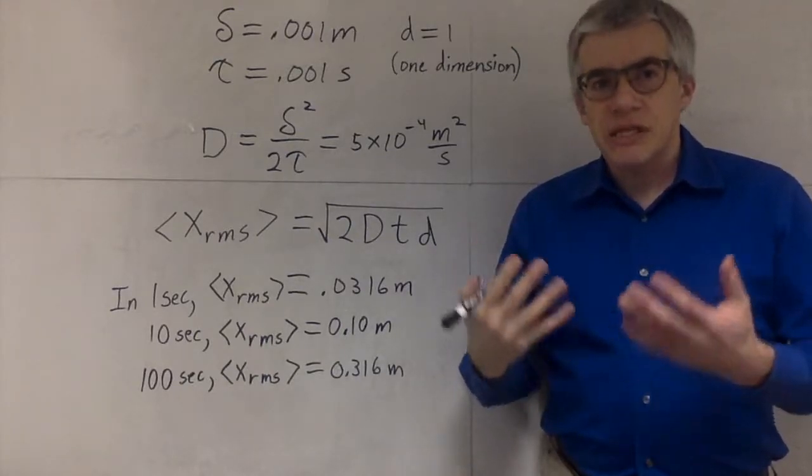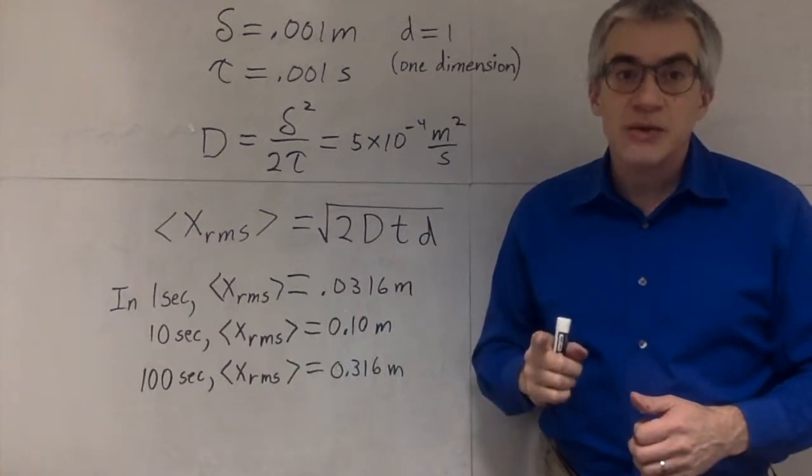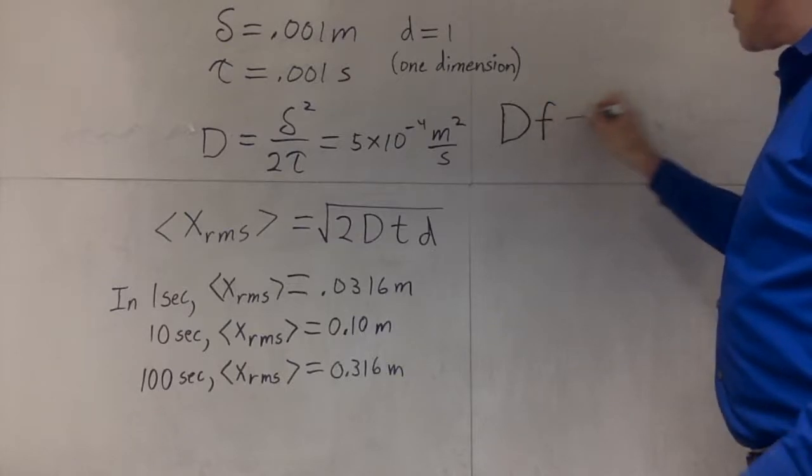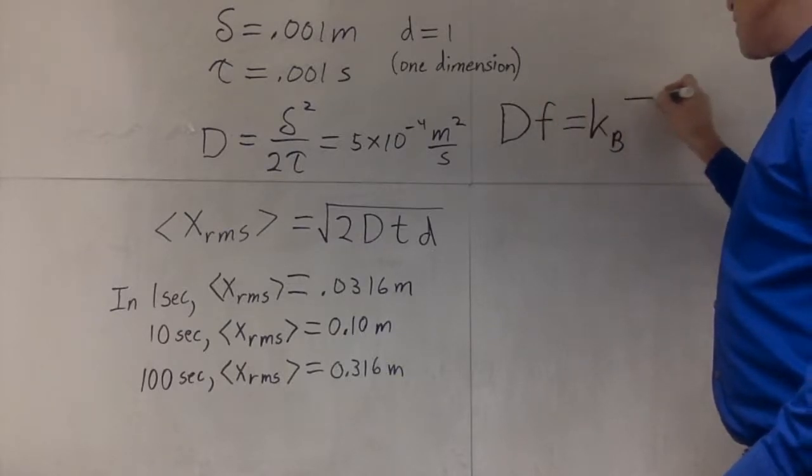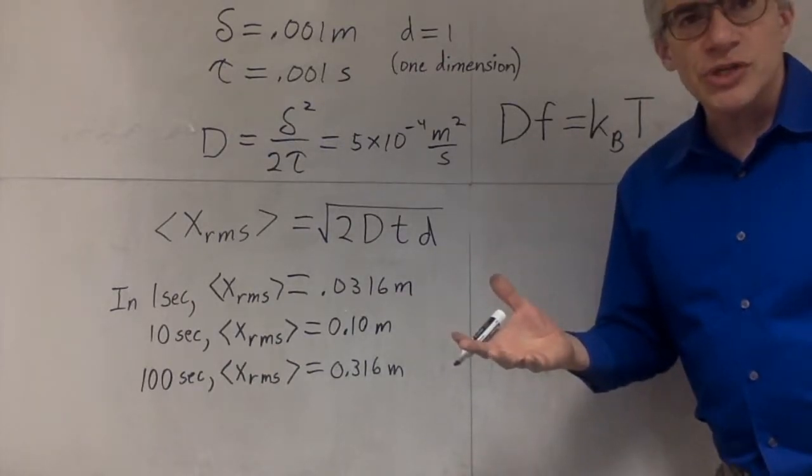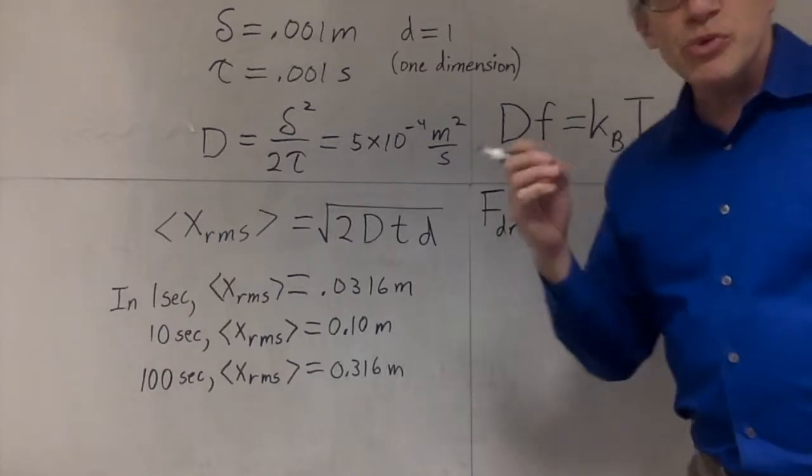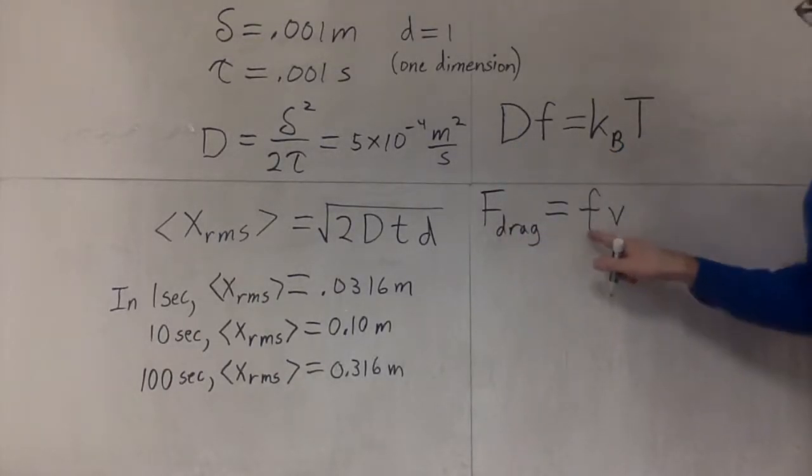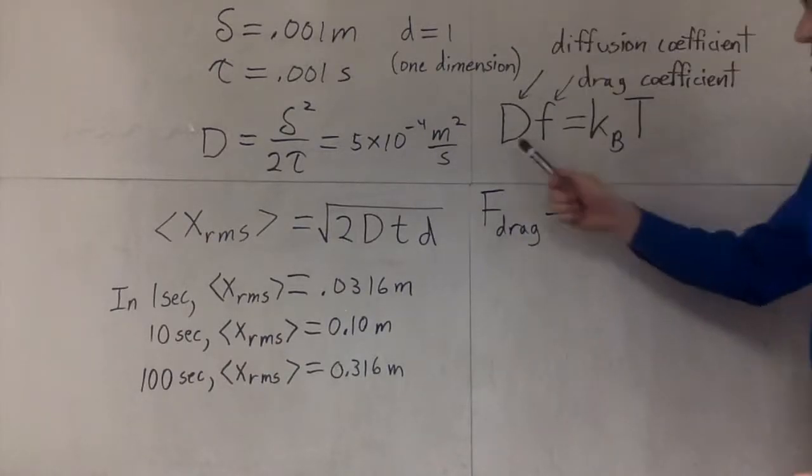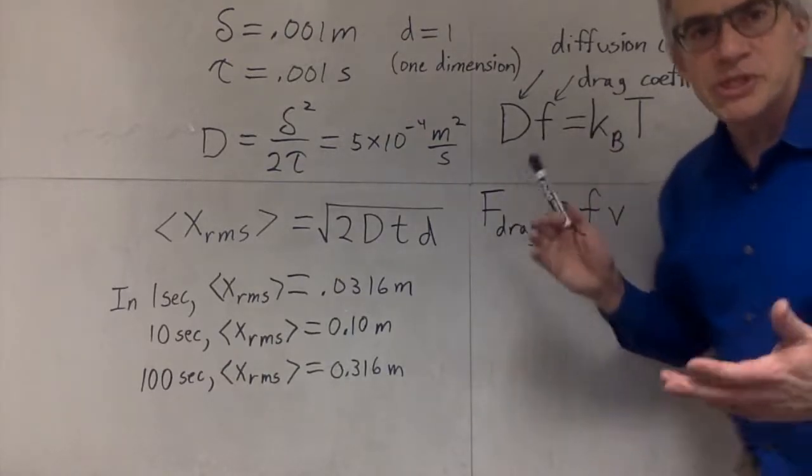Well, it turns out that we have Einstein to thank for a formula that is diffusion coefficient times drag coefficient equals Boltzmann's constant times the temperature in Kelvins. What's the drag coefficient? If you have a drag force, which is proportional to the velocity, the coefficient of the velocity is the drag coefficient. So this is the diffusion coefficient, and this is the drag coefficient. Kb, Boltzmann's constant.